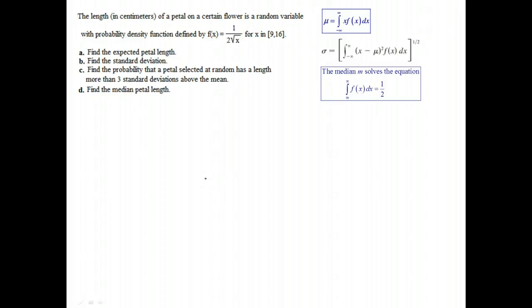We're looking at a probability question where the length of a petal for a certain flower is going to be modeled by a random variable with probability density function f(x) = 1/(2√x). But this is only when x is from 9 to 16, so we should write it as a piecewise function: 1/(2√x) when x is between 9 and 16, and then 0 otherwise. The function is 0, and then only between 9 and 16 does it become this 1/(2√x).